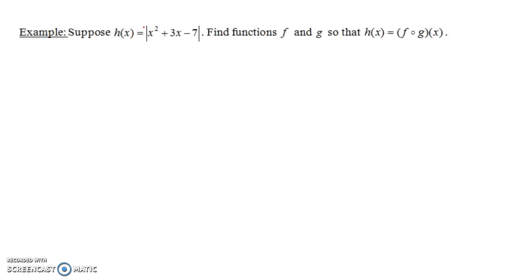Let's suppose we have h of x is the absolute value of x squared plus 3x minus 7. Again, find functions f and g, so that h is that function composition, f composed with g of x. And again, here we're writing this where g is the inside function, because it's f of g of x. So what do you think that the g should be?